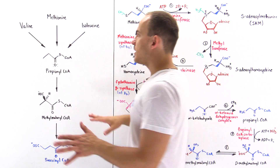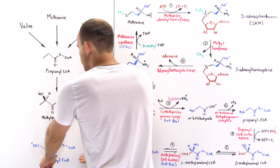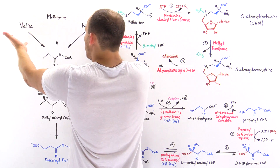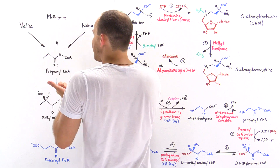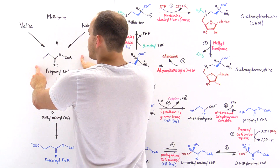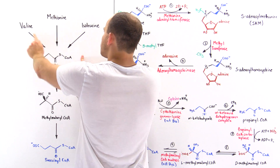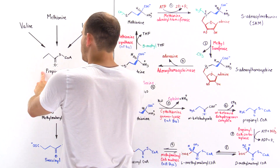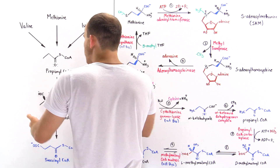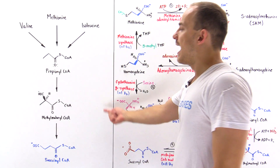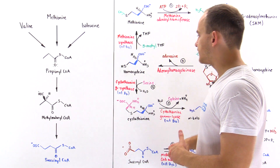Before these amino acids are transformed into succinyl coenzyme A, they all converge — the pathway of metabolism of these amino acids all converge at propionyl coenzyme A. So we first transform these into propionyl coenzyme A, then that becomes methylmalonyl coenzyme A, and that ultimately is transformed into succinyl coenzyme A.